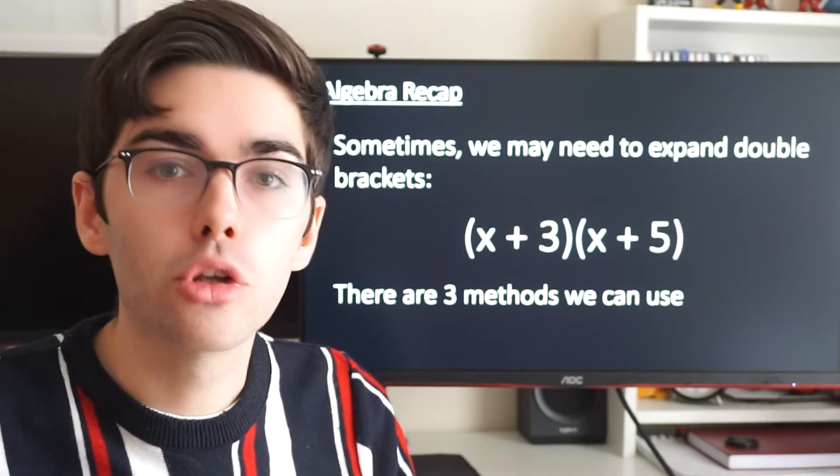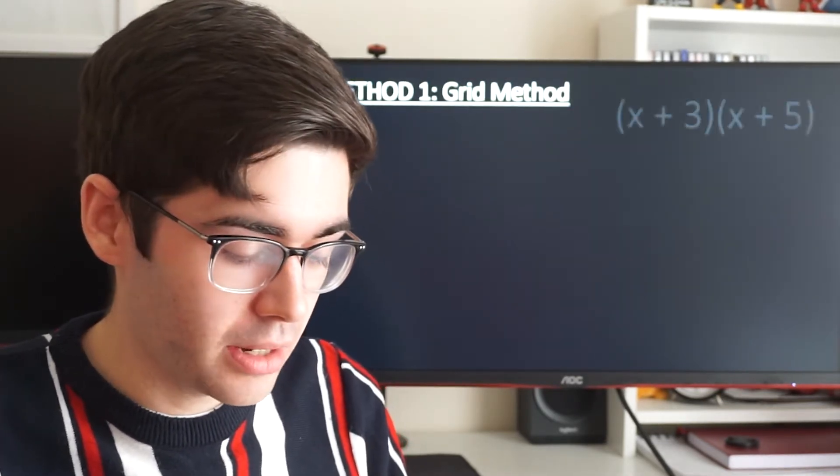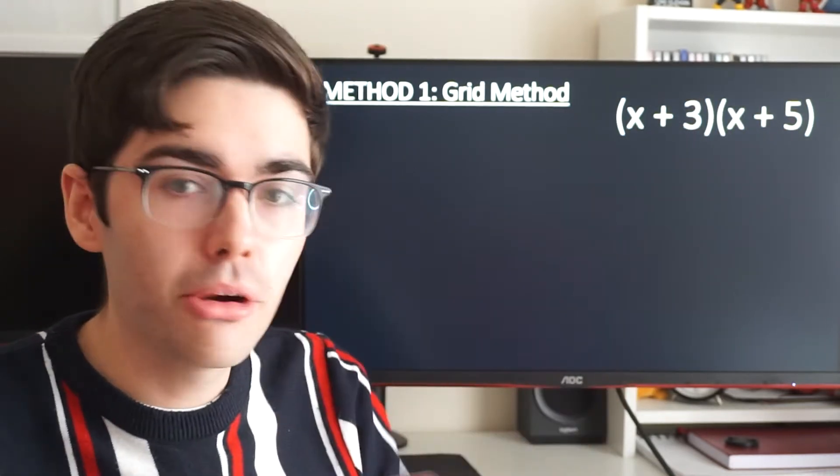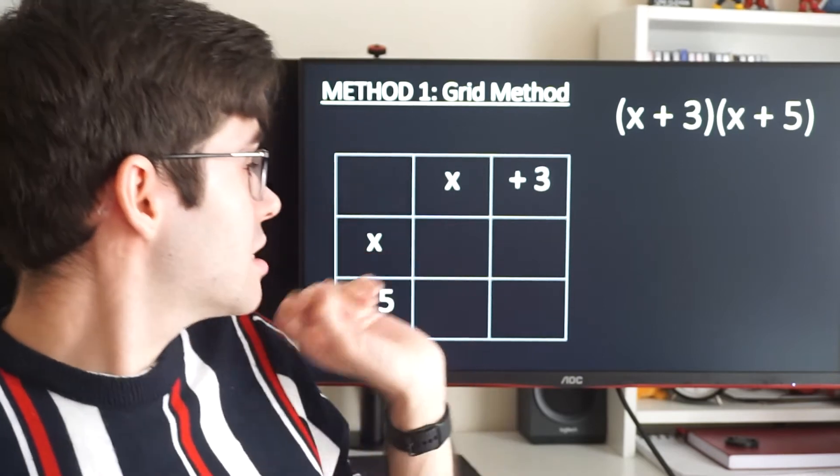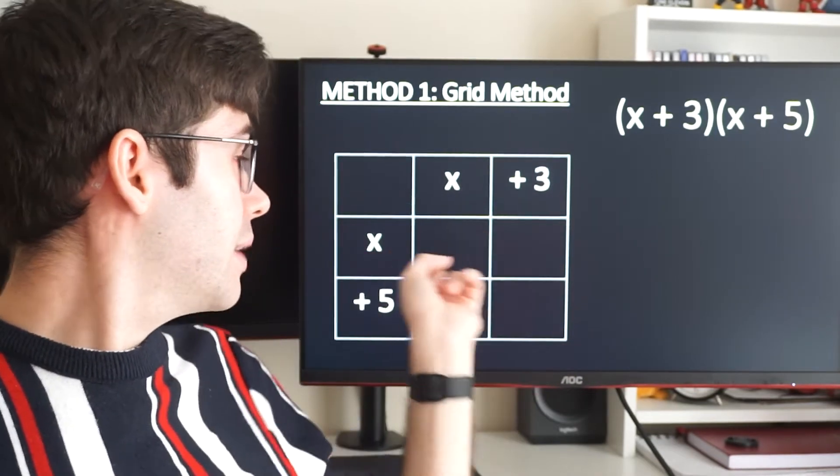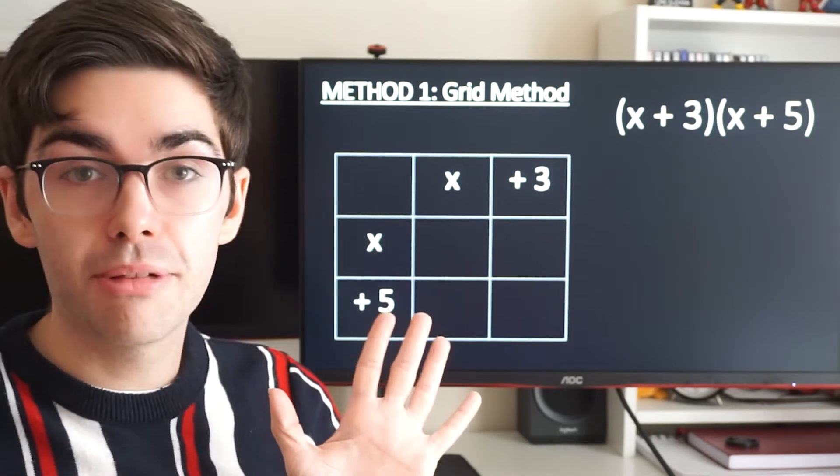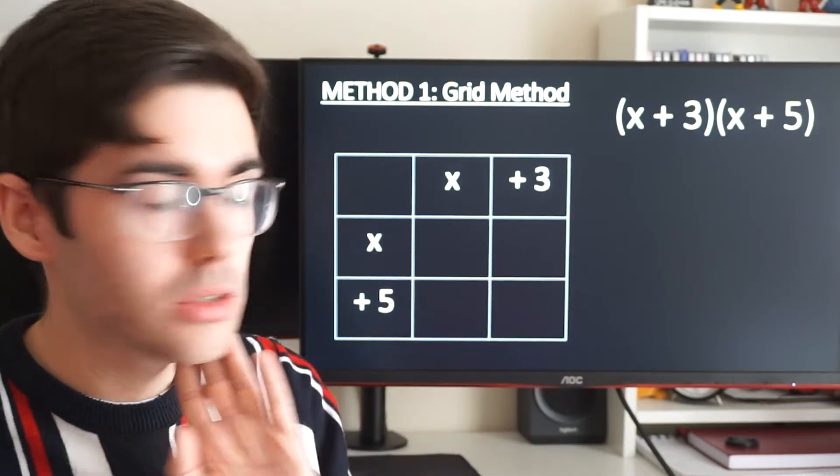The first method, very simple, grid method multiplication. So I have to multiply x plus 3 by x plus 5. I'm going to put that all into a grid like this. x plus 3, x plus 5. I've put it all into a grid method, and this is a multiplication grid, so I'm just going to times it all out.